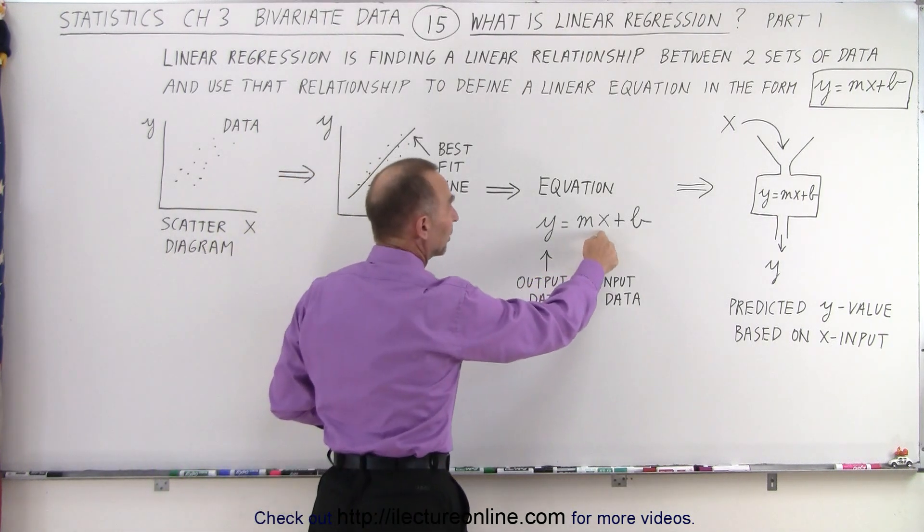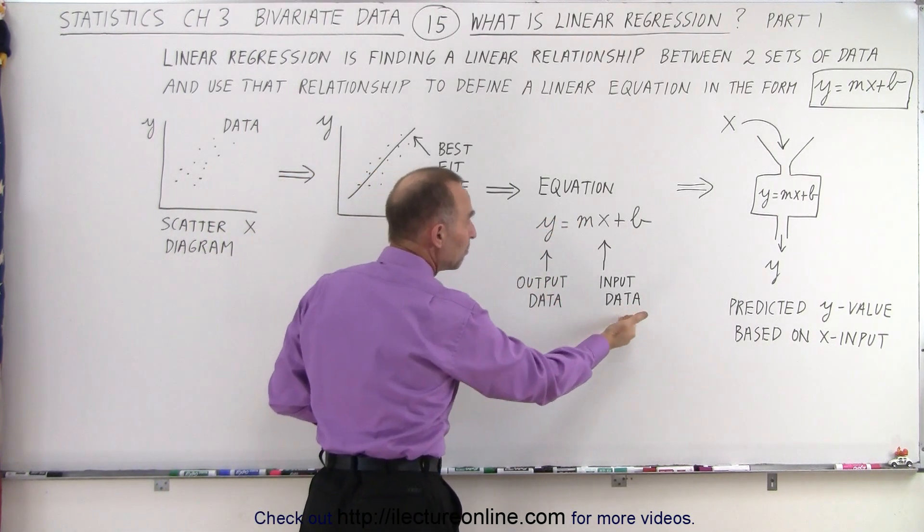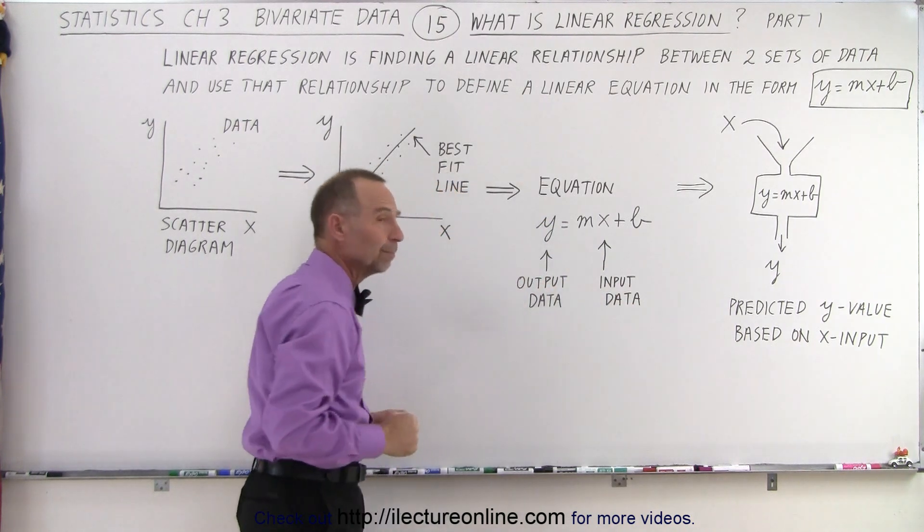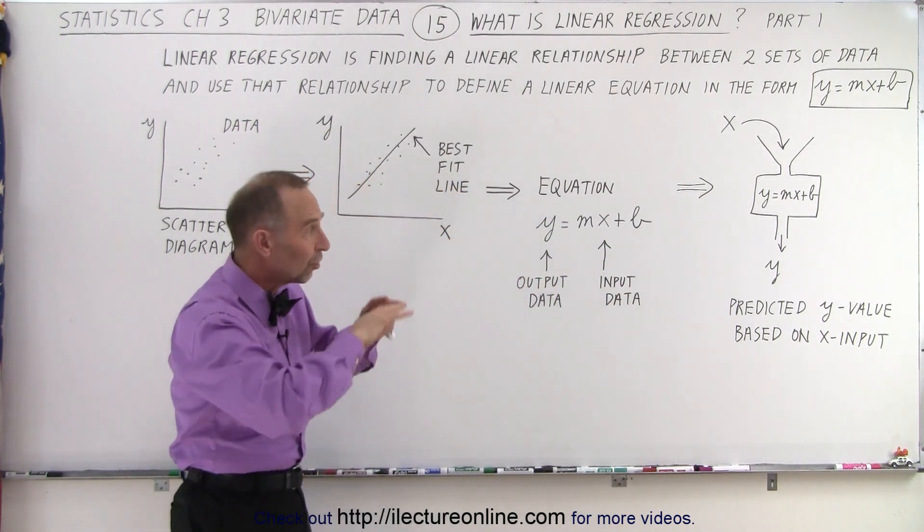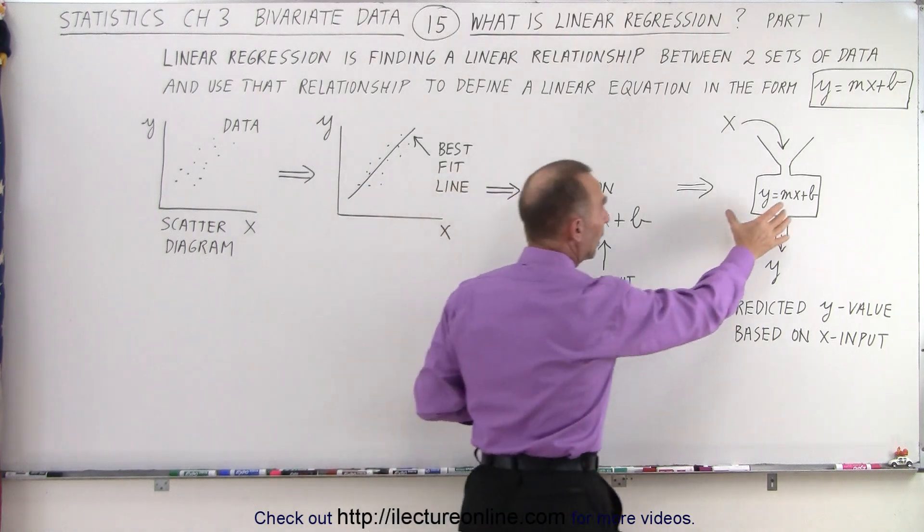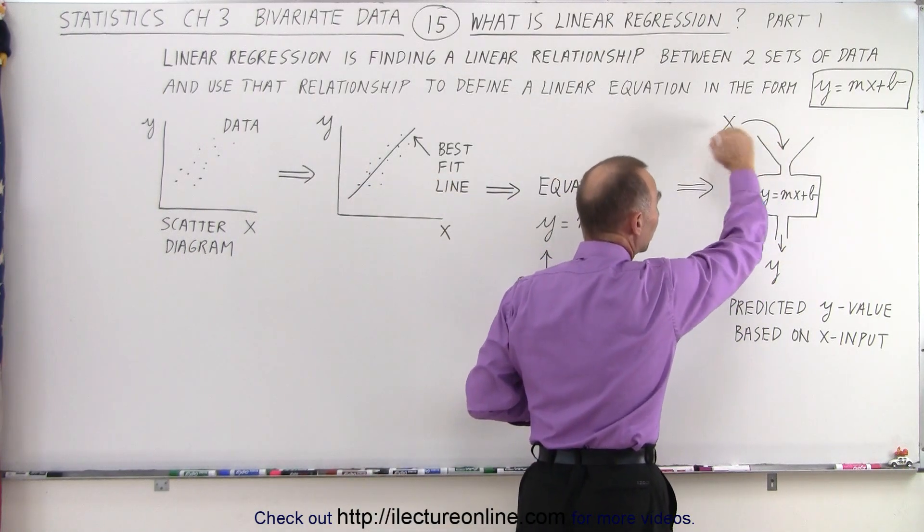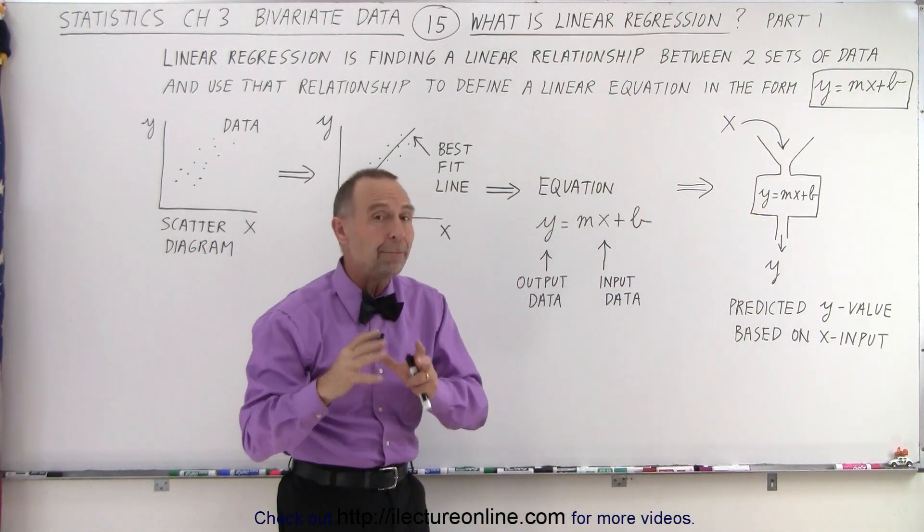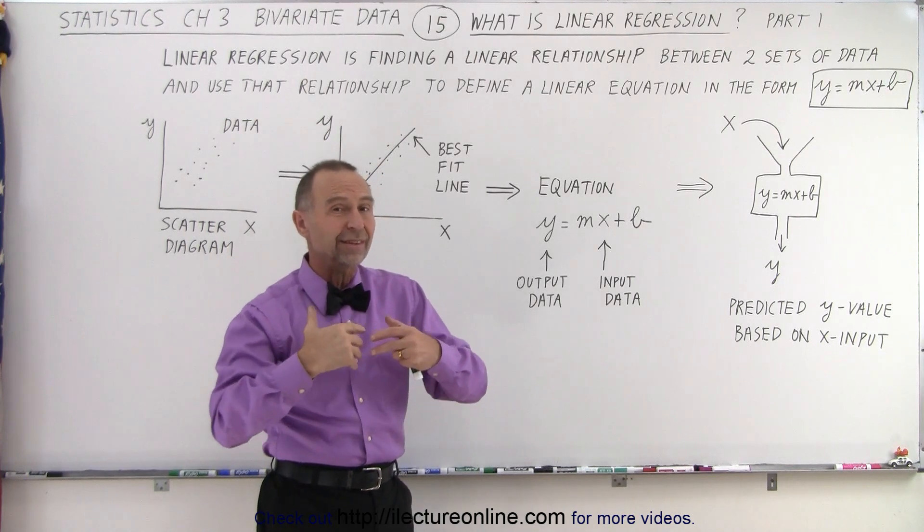So we have the independent variable and the dependent variable. We call that the input data and the output data. The ultimate goal then is to set up a mechanism using that equation so that if we have an input of a particular variable, that may not be part of our data set.